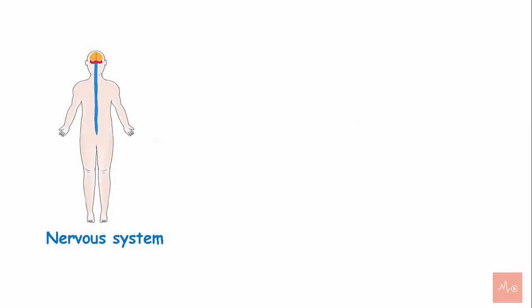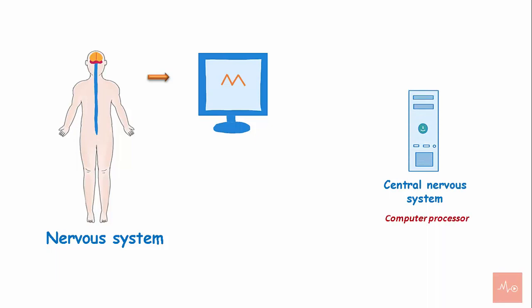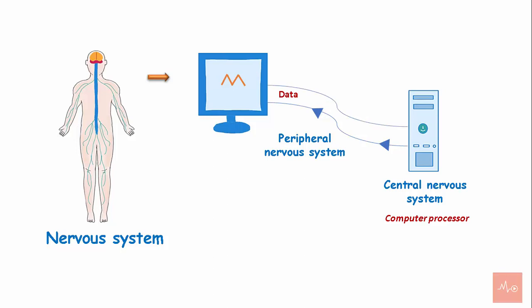The human nervous system is like a computer. The central nervous system functions like a computer processor that performs most of the functions of the body, whereas the peripheral nervous system acts like a system of cables that carries data from the central nervous system to the body and brings the feedback from the body to the central nervous system.